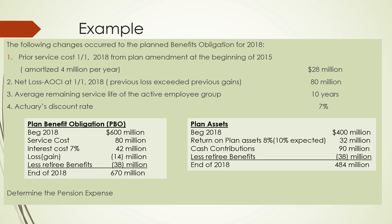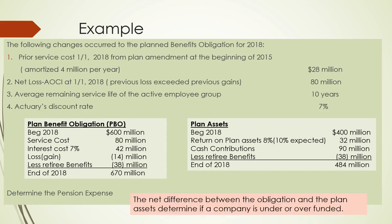The net difference between the obligation (the PBO) and the plan assets determines if a company is under or overfunded. In our example, we are underfunded because our obligation exceeds our assets.